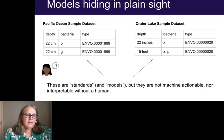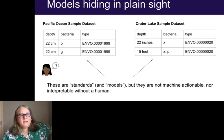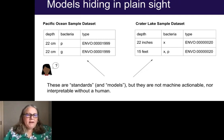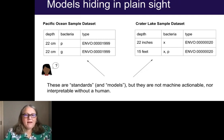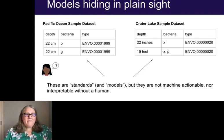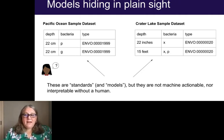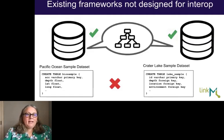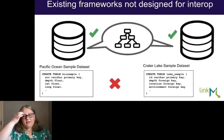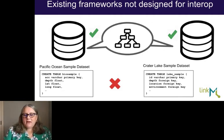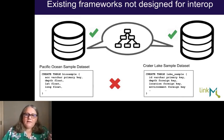The point is that models for our data are really hiding in these data sets in plain sight. These are standards, they are models, but they're not machine-actionable. It really takes a human to interpret the values. As a researcher trying to combine data sets, I don't have metadata to know that all values in the depth column for one data set are in feet. I don't know if the bacteria column in the Crater Lake sample holds a list or a single bacterium with a comma in the name.